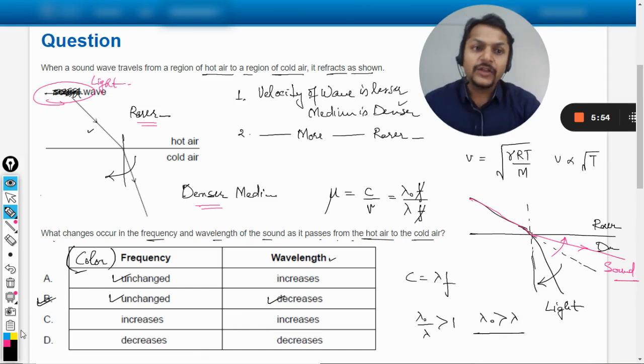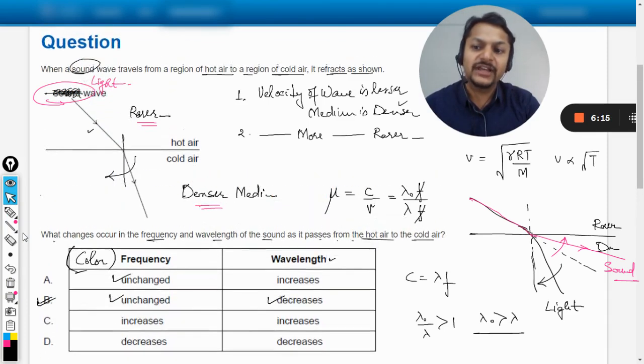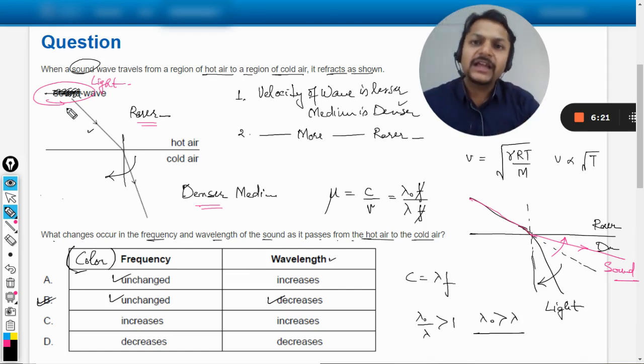Now the problem with this question is that technically speaking the question is not right. Instead of sound wave it should be light wave, then everything will fall in place. And why I'm saying so? Because let us check the mark scheme. According to the mark scheme the answer given is B. So that is why I'm sure about this thing that this question is wrong at this point.